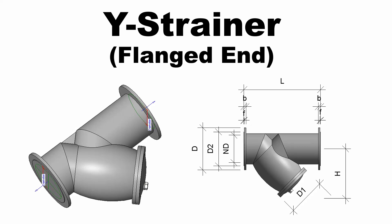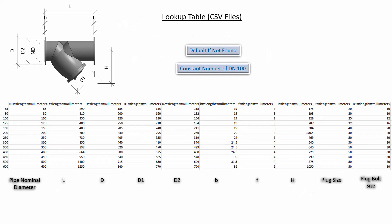Hello everyone. Today I would like to show you how to create a flanged end Y strainer Revit family. I will refer the data in the picture to create the parameters. This is a lookup table CSV file, and its data are referred from the manufacturer specifications.